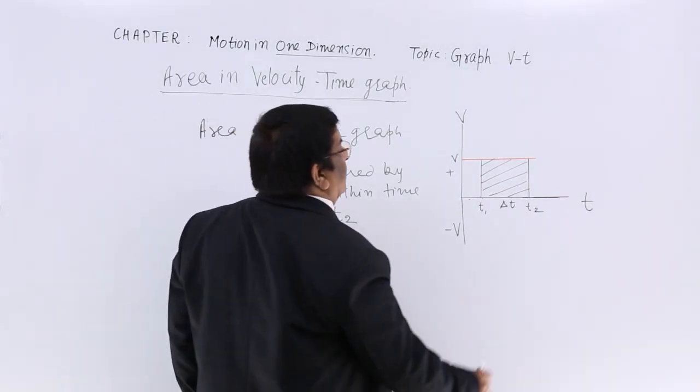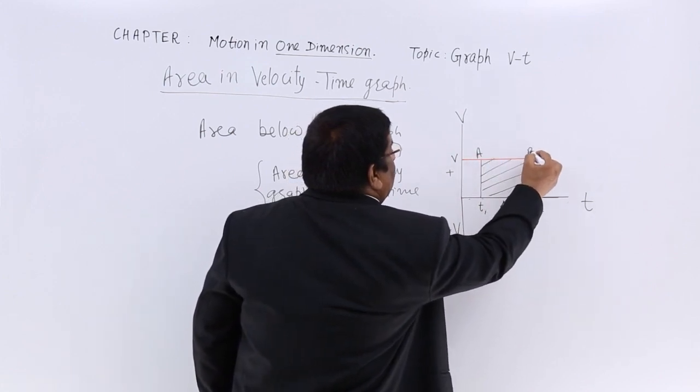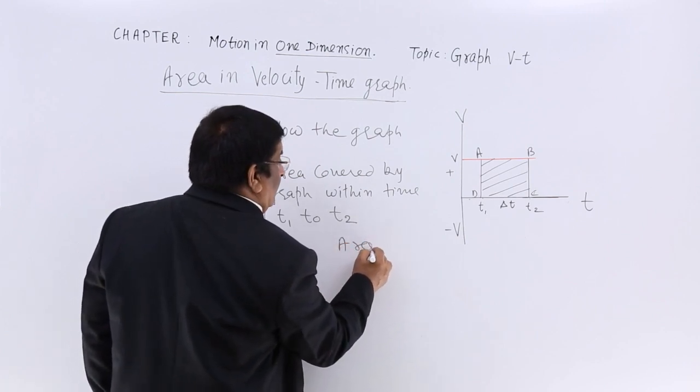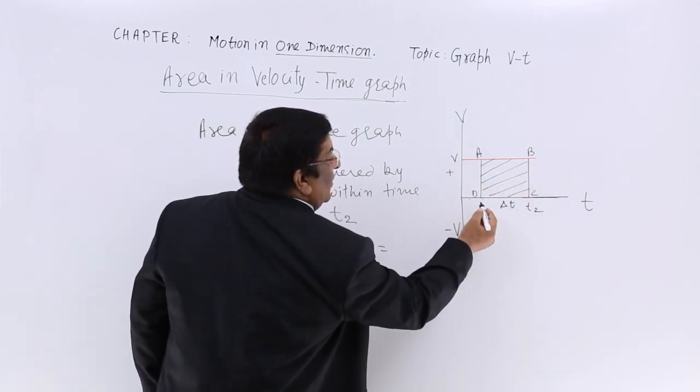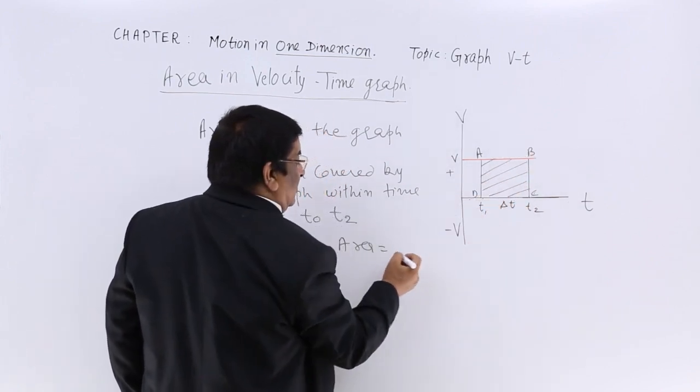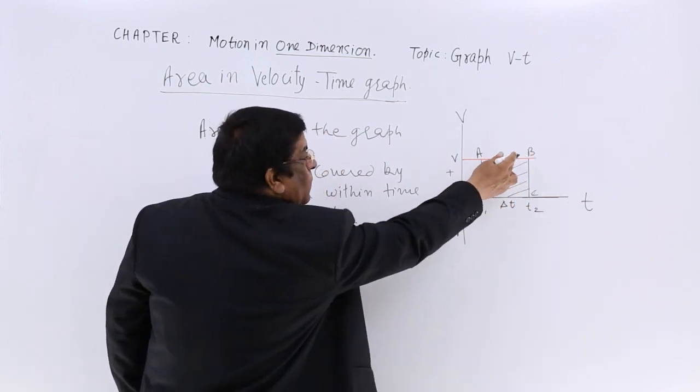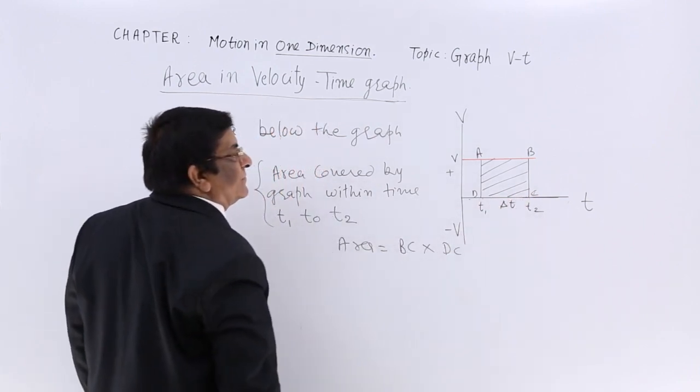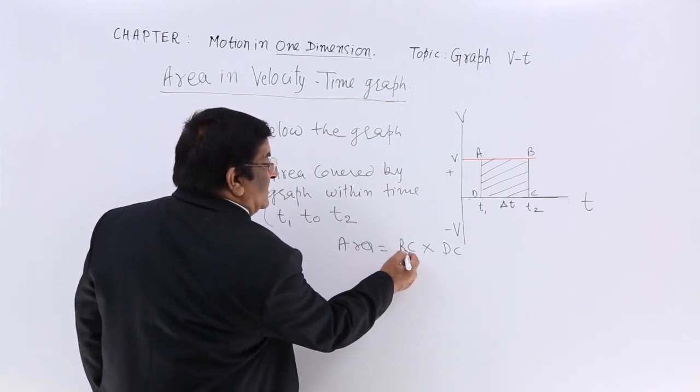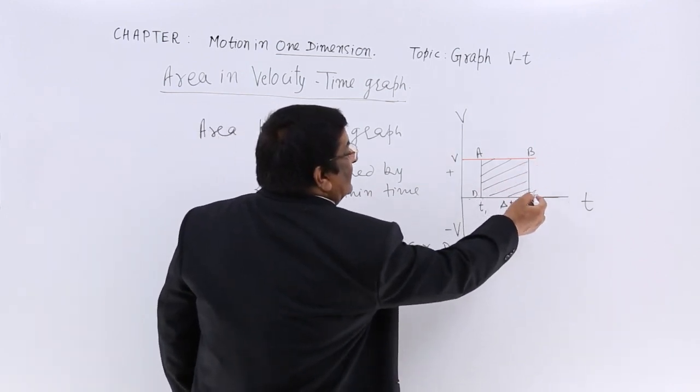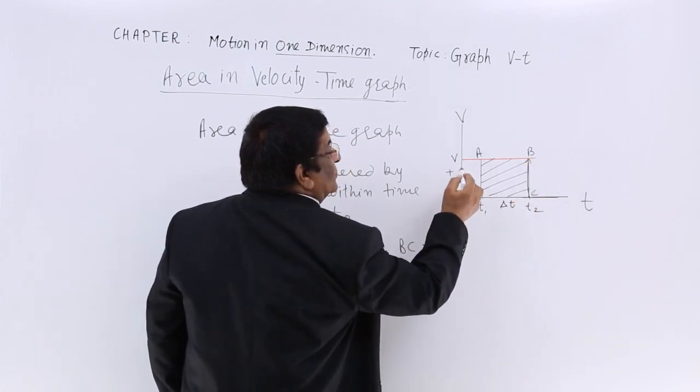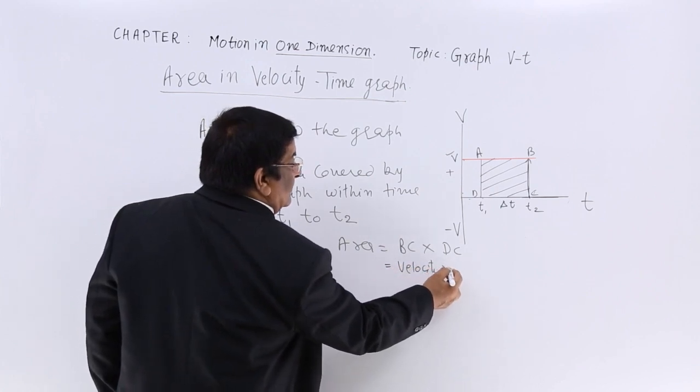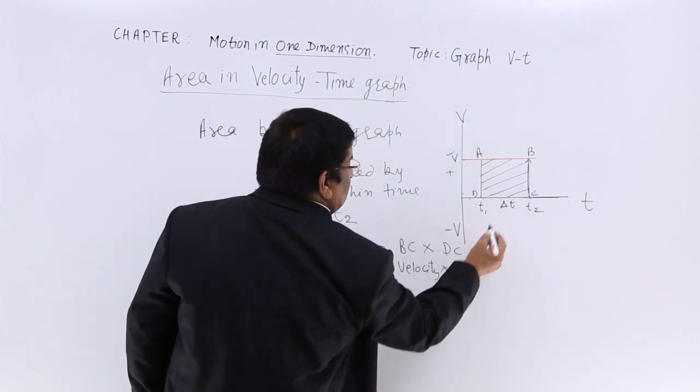How do we calculate this area? The answer is, if I write it ABCD, then area is equal to AB or we can say CD multiplied by BC, this length into width. Now what is represented by BC - BC height and this height shows velocity. So this I can write velocity into DC, this is the time period.